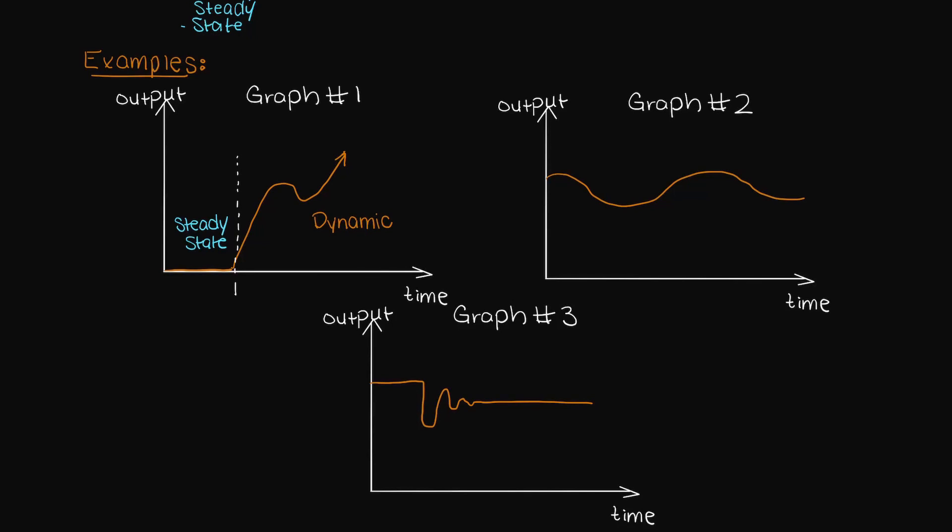Let's move on to graph number two. Clearly there are no regions on this graph where the output is not constantly changing, and therefore this whole region is dynamic.